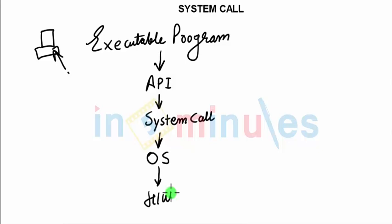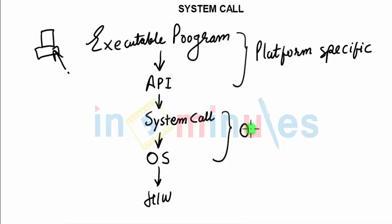When we talk about API and the executable, we can understand this way that they are platform specific. And similarly, when you talk about system call and OS, well technically speaking, they would be OS specific hardware.